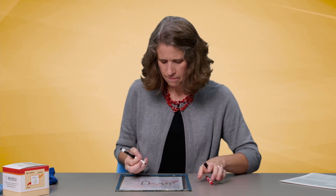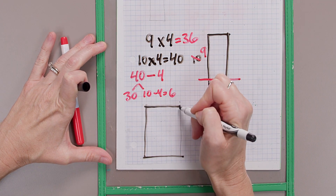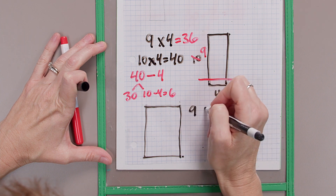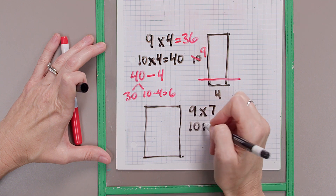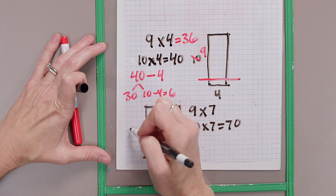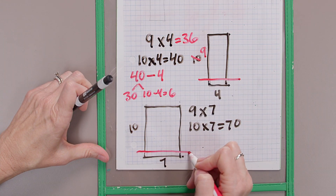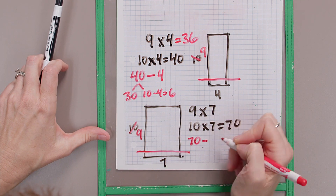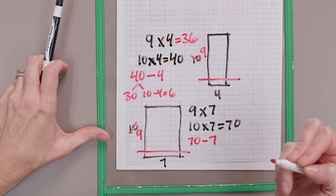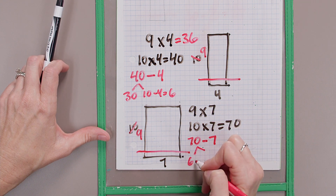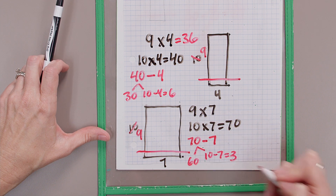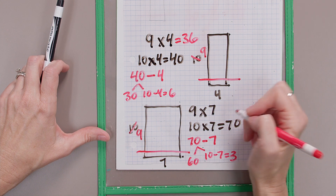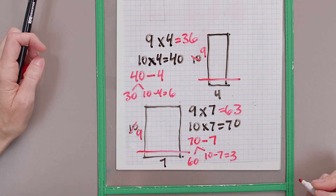Let's draw a ten by seven rectangle this time. So I'm going to solve nine times seven. Ten times seven is seventy — that's a ten by seven. I don't need that extra group of seven, so I'll cut that extra group of seven off. Now I have nine groups of seven. That's seventy minus that extra group of seven: seventy minus seven. I'm going to think of it as a sixty and a ten. Ten minus seven is three. Sixty plus three is sixty-three. Nine times seven is sixty-three.